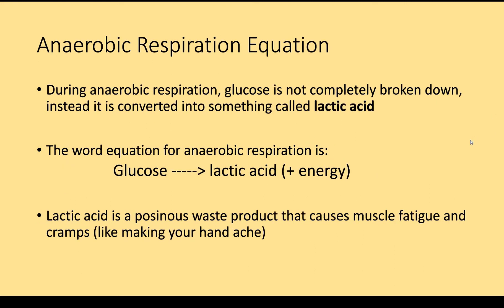The anaerobic respiration equation — make a note of this. During anaerobic respiration, glucose is not completely broken down. Instead, it is converted into something called lactic acid. So instead of glucose and oxygen leading to carbon dioxide and water, because we have no oxygen, we have glucose still producing energy — but we're producing lactic acid. You can see the equation there on screen. Lactic acid is actually a poisonous waste product, and it causes muscle fatigue and cramps — for example, making your hand ache. It's the lactic acid that produces that discomfort in your muscles.